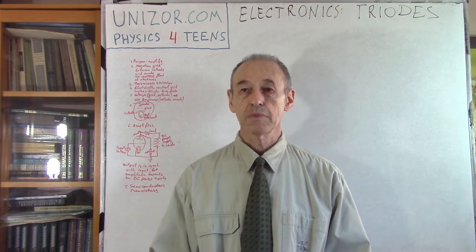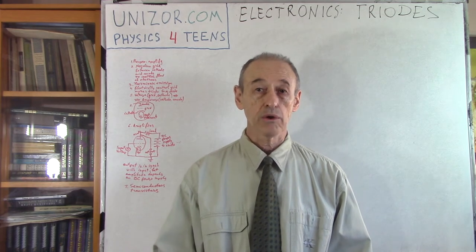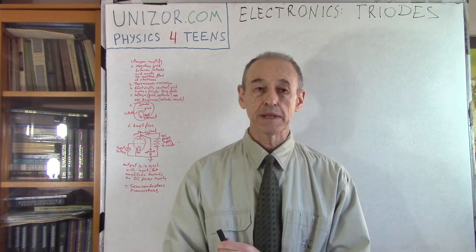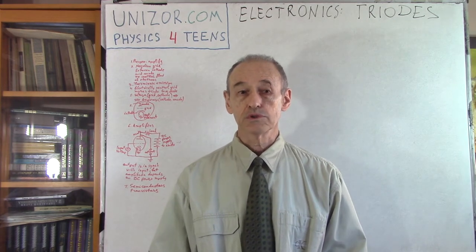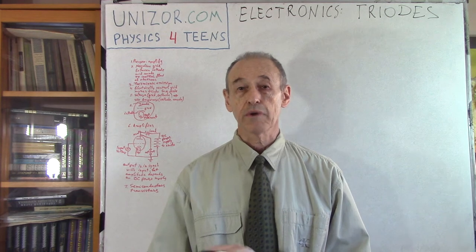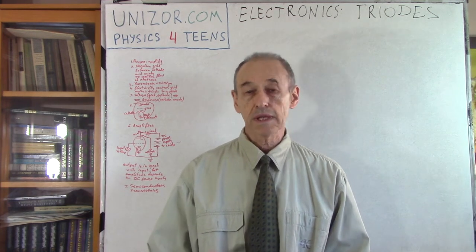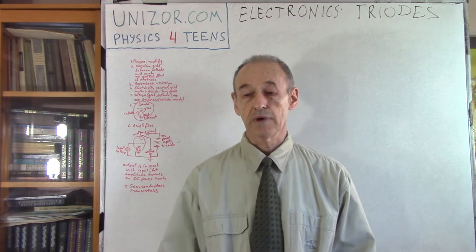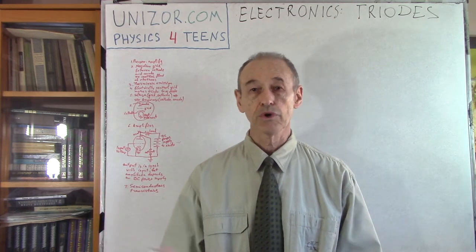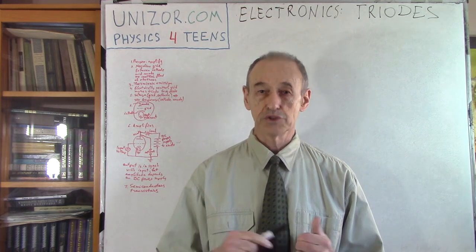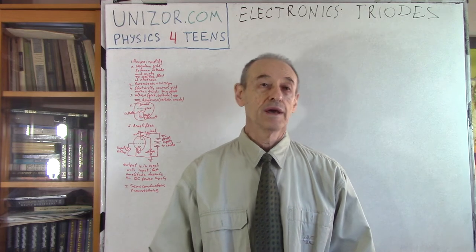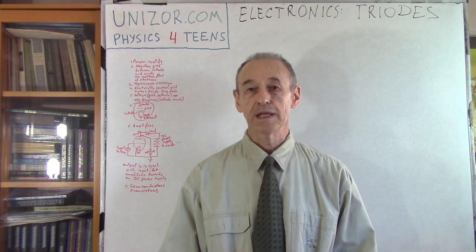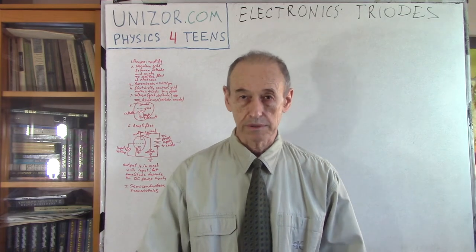The previous lecture was about one particular device called diodes, how it's arranged, how it works, its main principles. Today we will continue talking about another device called triode. Triodes are slightly different than diodes and have a slightly different purpose, but it's a relatively simple electronic device used everywhere.